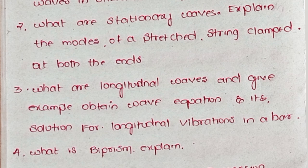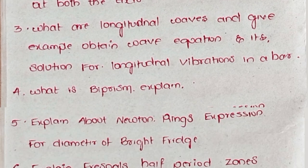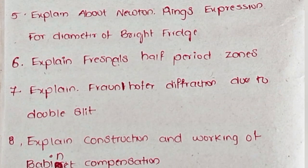Fourth, what is biprism? Explain briefly. Fifth, explain about Newton's rings expression for diameter of bright fringe. Sixth, explain Fresnel's half period zones.